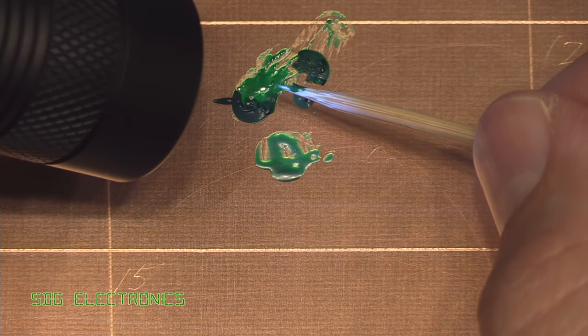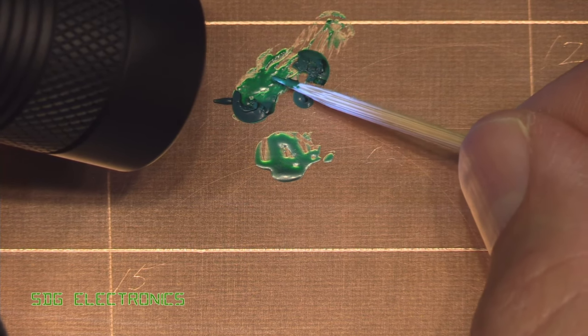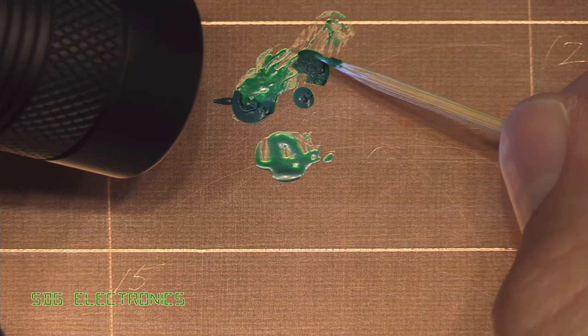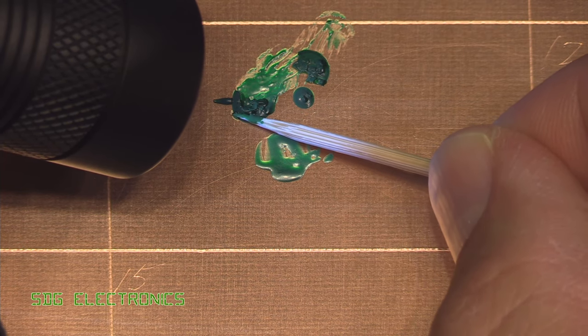So it'd be interesting to see if the blue behaves any differently. Obviously once you've applied a thinner layer it cures really quite quickly. But yeah, this blob was about two millimeters tall and that's just too much for the ultraviolet light to penetrate.